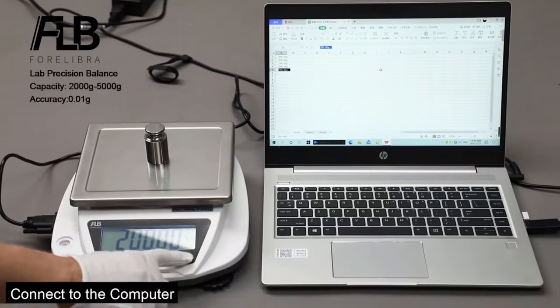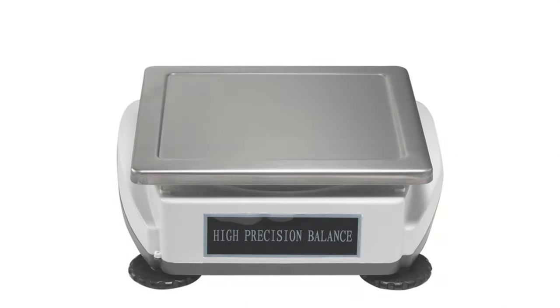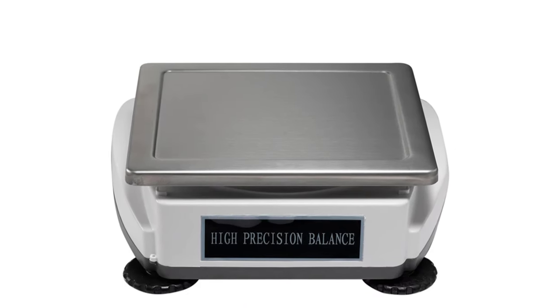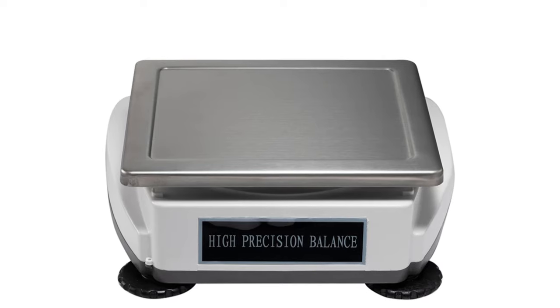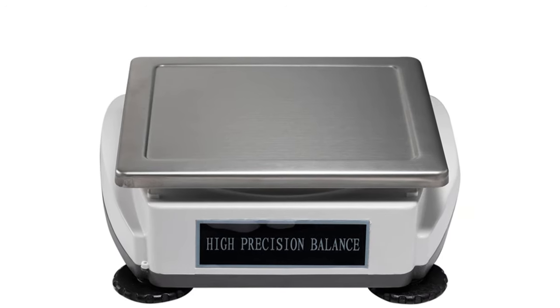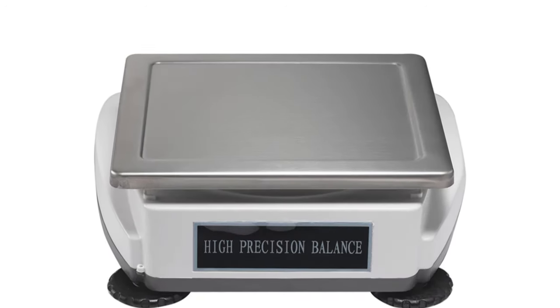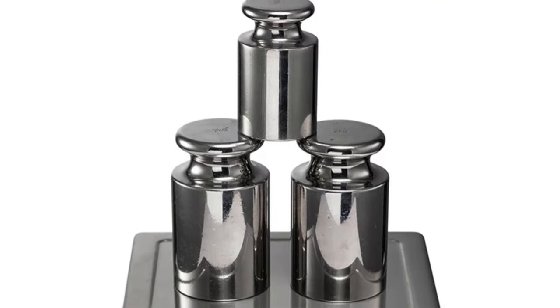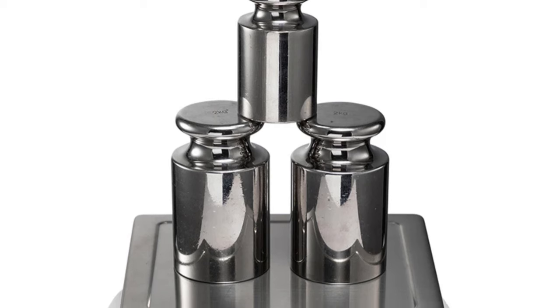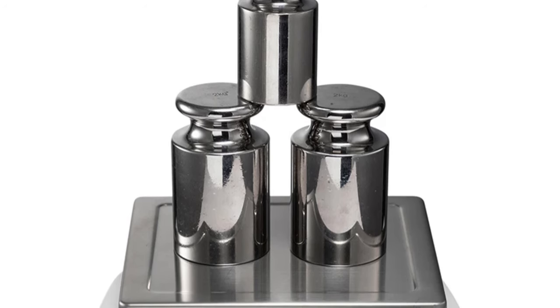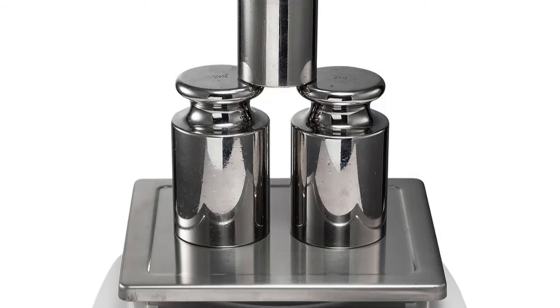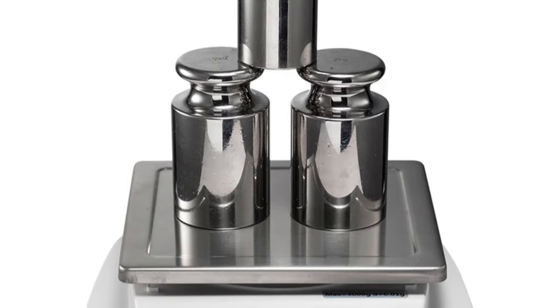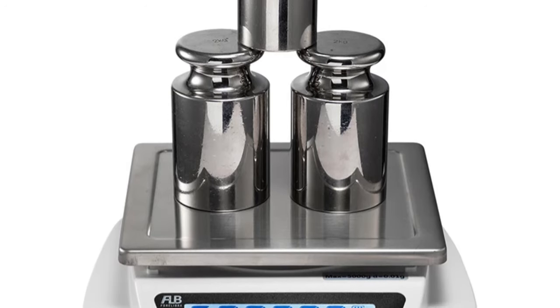The digital precision ensures ease of use and accurate readings. The electronic weight scale adapts to various needs, from small-scale kitchen measurements to more extensive laboratory applications. The FLB4 Libra Analytical Balance is a durable kitchen appliance with a robust build, making it a wise investment for both professional and home use. The brand's commitment to excellence is evident in the construction and performance of this analytical balance.